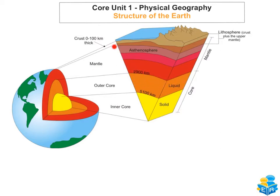Moving up into the mantle — the mantle has a few different layers within it. It surrounds the core and it's the largest layer, making up about 80% of the Earth's volume. The rocks within it are in a molten or semi-molten state.